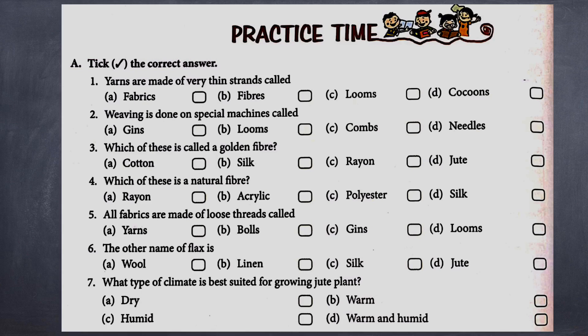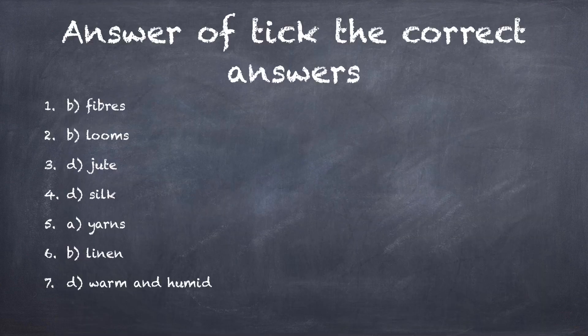Now check your answers. Students, check your answers and feel happy if your answers are correct. First: B) fiber. Second: B) looms. Third: D) jute. Fourth: D) silk. Fifth: A) yarns. Sixth: B) linen. Seventh: D) warm and humid.